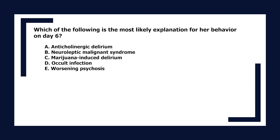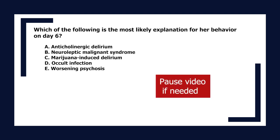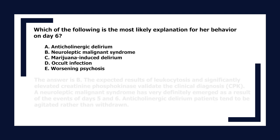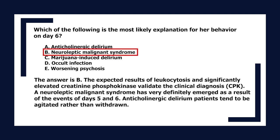On day 6, after haloperidol was increased to 20 mg/day, Ms. S. became withdrawn, diffusely rigid, with temperature of 39°C, WBC of 14,300, and creatinine phosphokinase of 2,100. The most likely explanation is B. Neuroleptic malignant syndrome. Leukocytosis and significantly elevated CPK validate this clinical diagnosis. Anticholinergic delirium patients tend to be agitated rather than withdrawn.